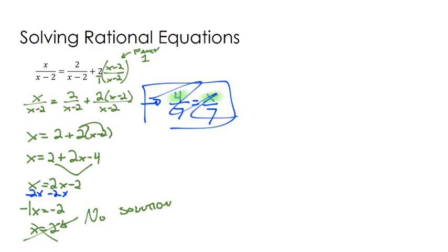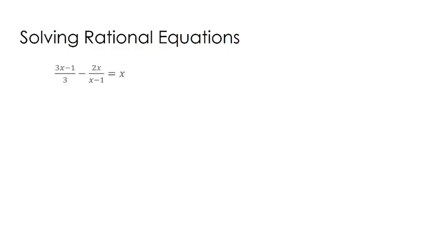Let's do another example. So on this example, it's really the same idea, but it's a little bit trickier to find that common denominator. So if you look here, I'm going to kind of put a little space between these. If we have 3x minus 1 all over 3, I'm going to put a little space, and then we have 2x over x minus 1, and then that's going to be equal to x.